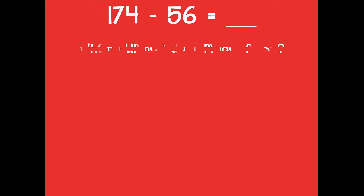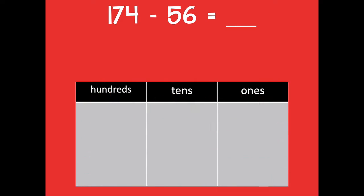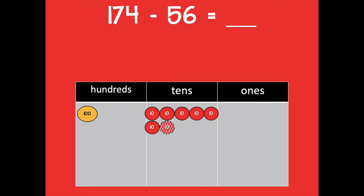What number do I model first? Yeah, 174, because that's the largest number. Here's my place value chart: 100, seven tens, and four ones.